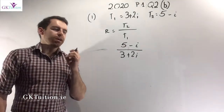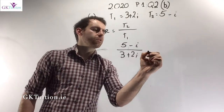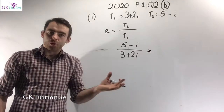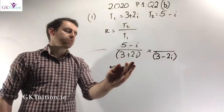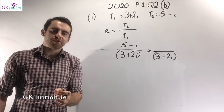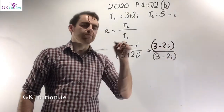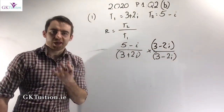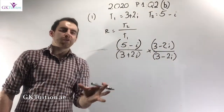You are not allowed to have an i on the bottom of a fraction, just like we saw in part A. If there are two terms, 3 plus 2i, on the bottom of the fraction, in order to eliminate the imaginary number, I need to multiply the bottom by its conjugate. If I multiply 3 plus 2i by its conjugate, there'll be no more imaginary numbers on the bottom. So I'm going to multiply the bottom by 3 minus 2i, and I must also multiply the top by the same thing, so I'm multiplying by 1 and not changing the value.